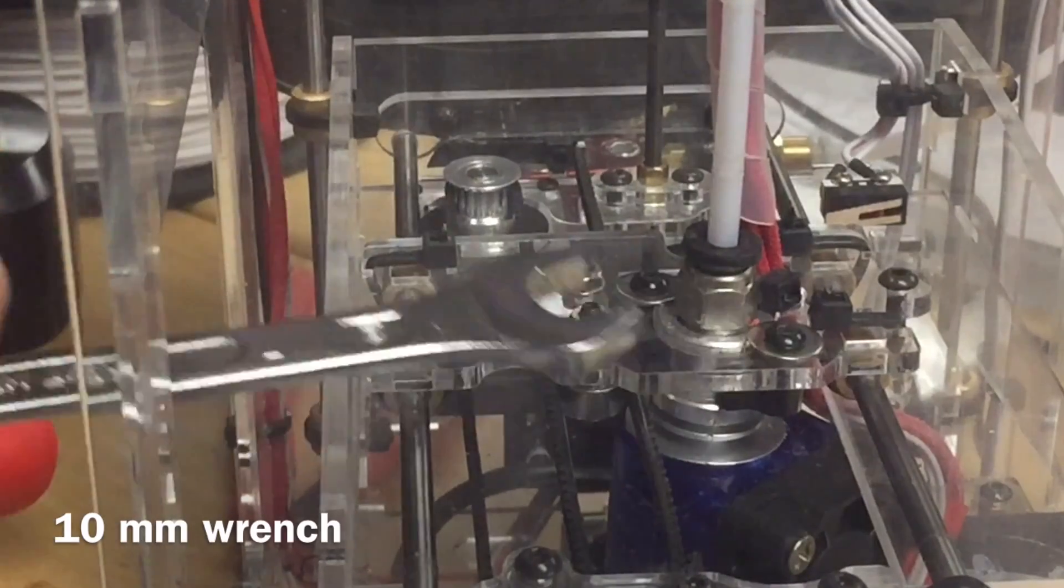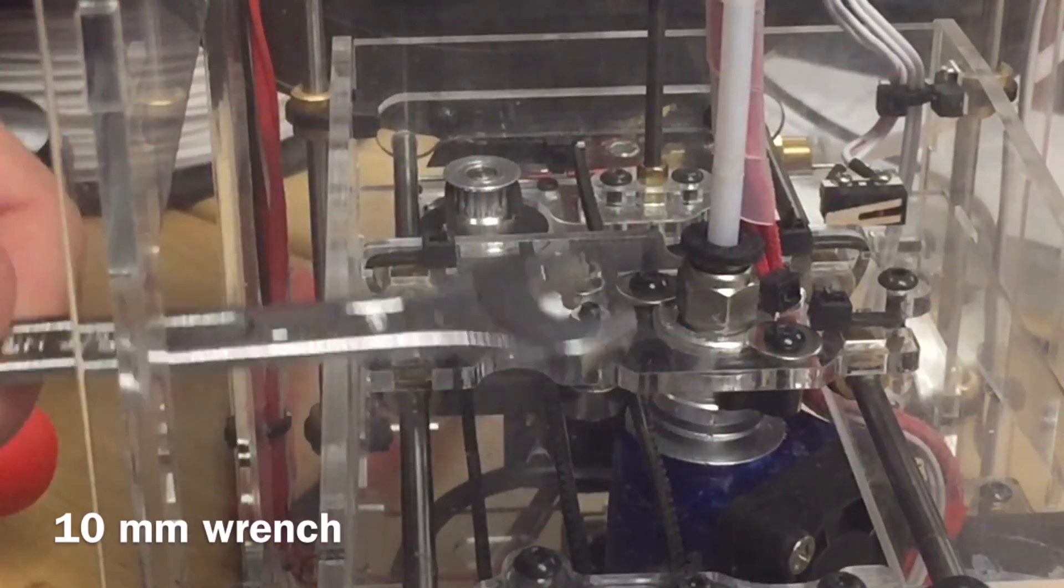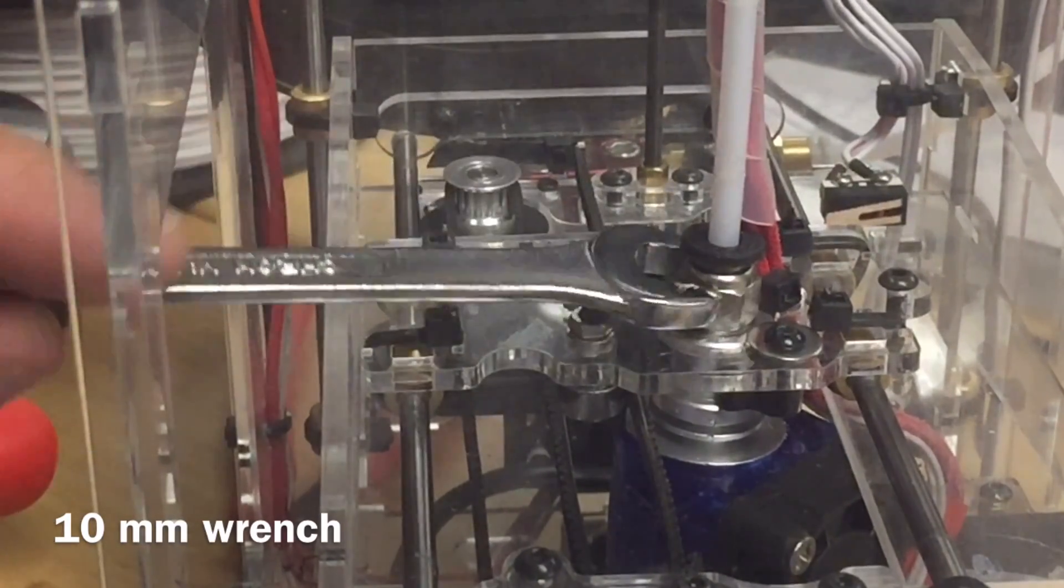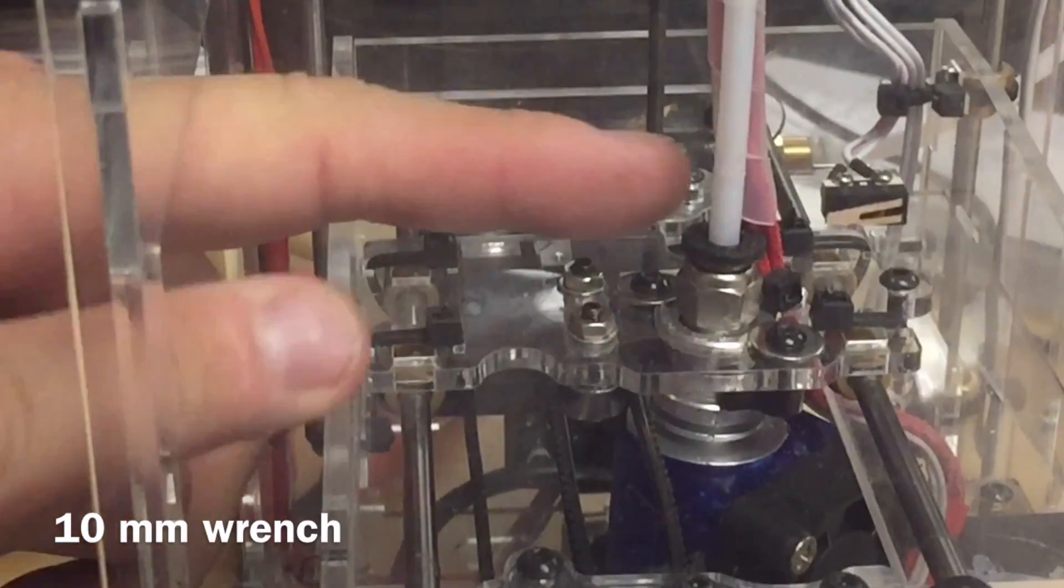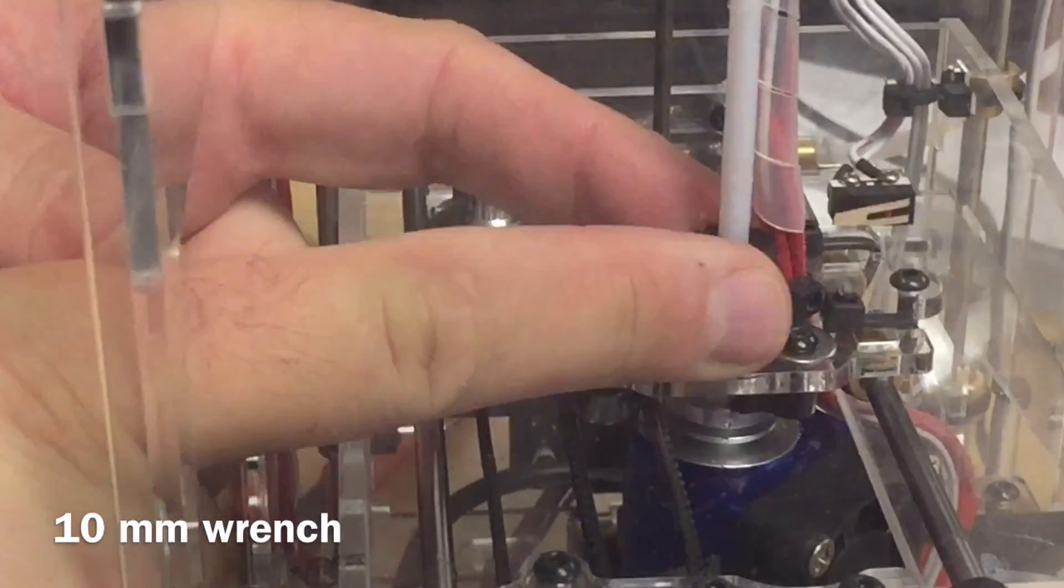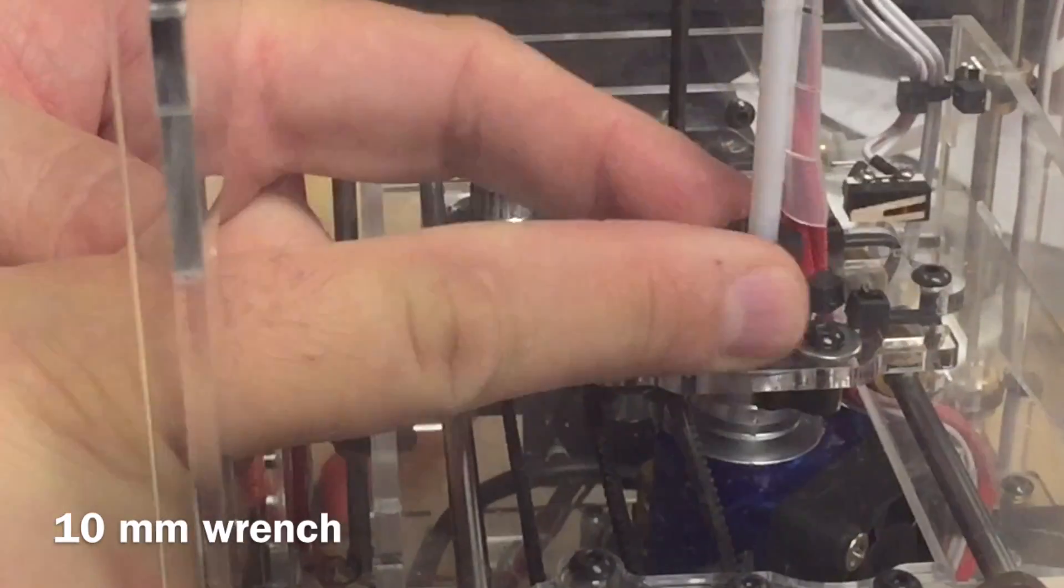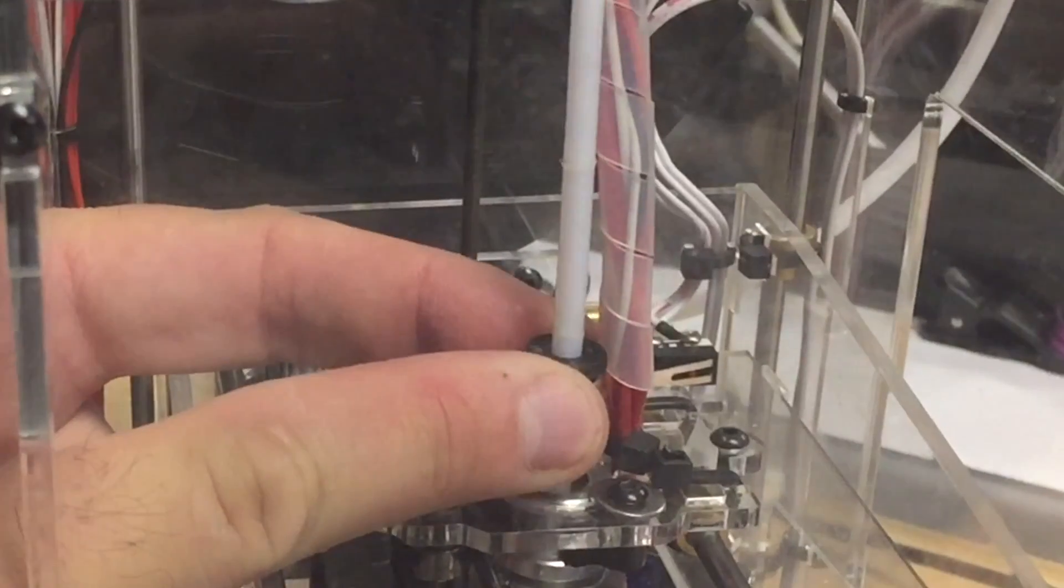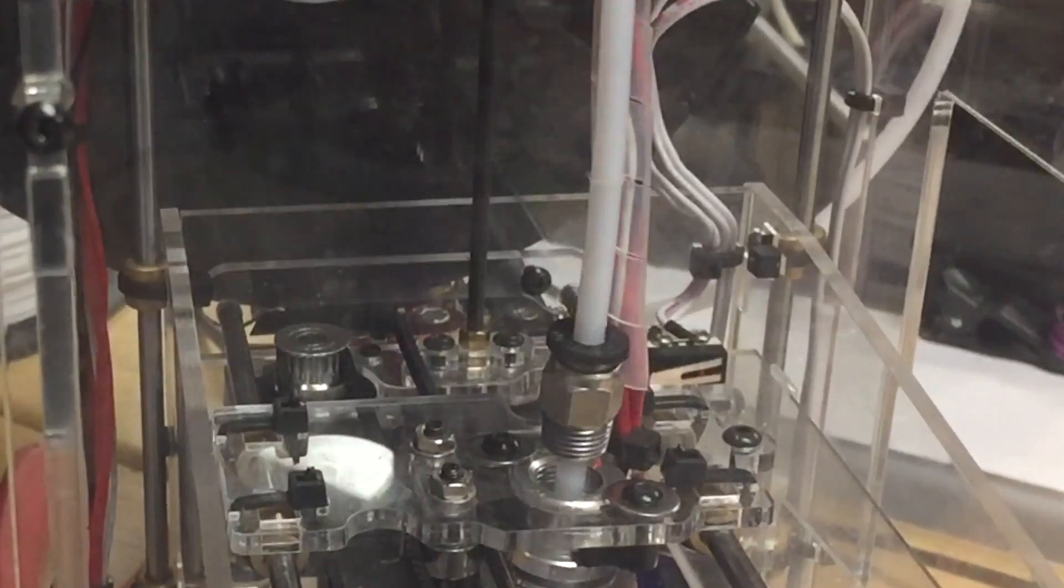The first step is to remove the Bowden tube from the hot end. I used a 10 millimeter wrench to loosen the nut, and then once it was loose enough I just used my fingers. Once you get it far enough you can pull the nut all the way out, then pull the Bowden tube out from the extruder. Mine still had the filament in place so I had to fight that a little bit. Once that was exposed I just clipped it with some clippers and then I was done. I had the Bowden tube disconnected from the hot end.